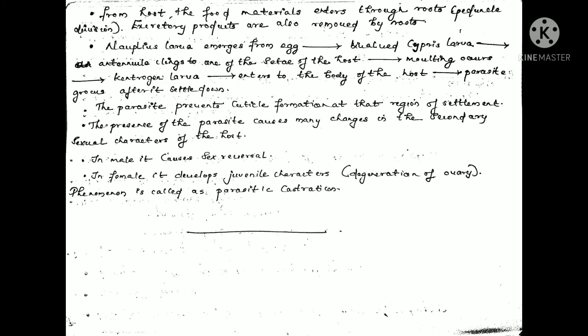When the parasite is present in the host's body, it prevents cuticle formation. That is why the presence of the parasite causes many changes in the secondary sexual characteristics of the host.